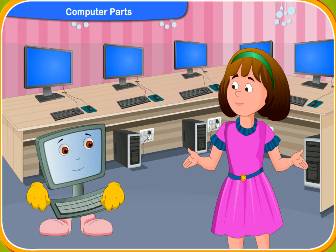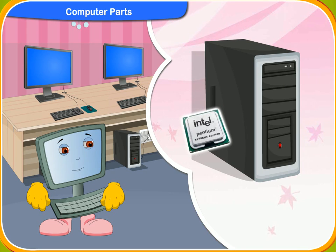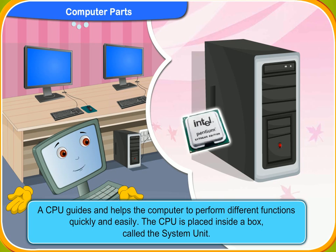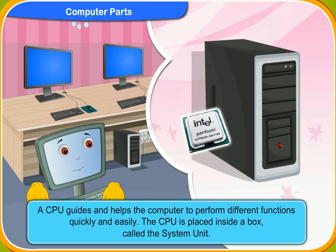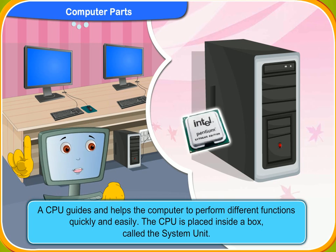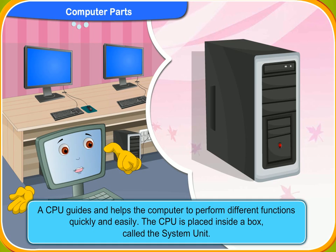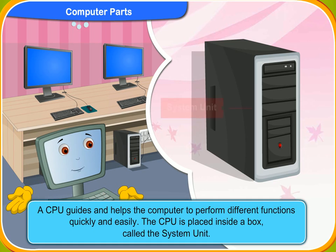What does a CPU do in a computer, Klico? A CPU guides and helps the computer to perform different functions quickly and easily. The CPU is placed inside a box called the system unit.